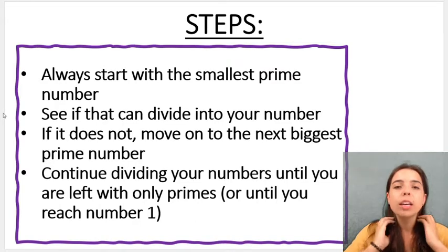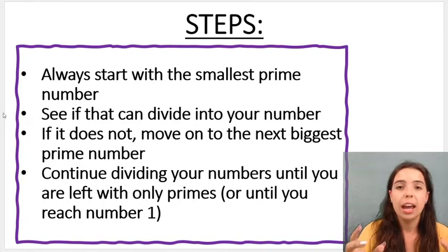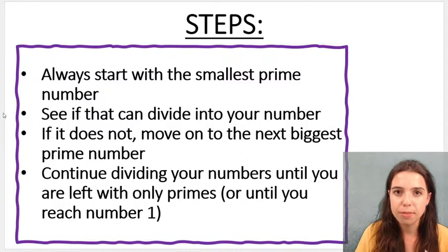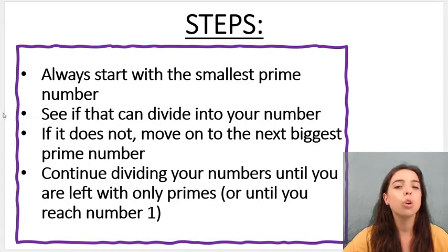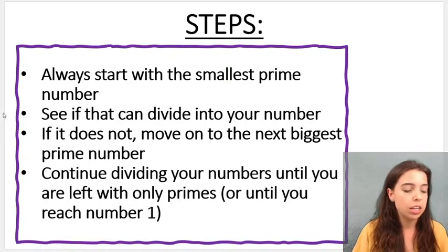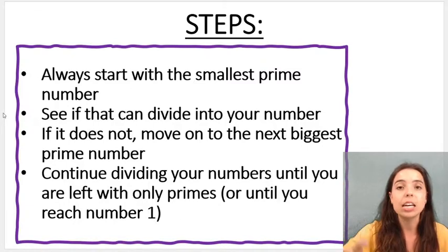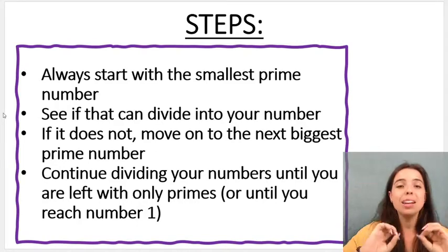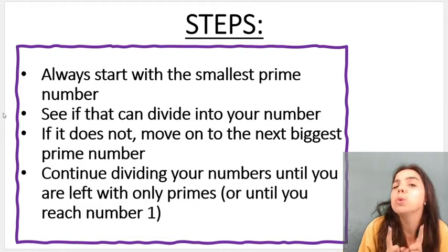Step one: if I'm looking to write a number — let's say 60, which is going to be my first example — as a product of its prime factors, how do I do this? Well, you take the number and you start with the smallest prime number, which we know is two, and we ask ourselves: is two a factor of 60? Can two divide into 60 without a remainder? If it can, you keep that number, you divide it, you move on, take the answer and do it again. It'll make a lot more sense with an example.